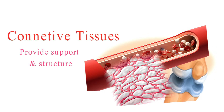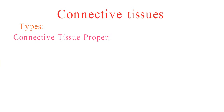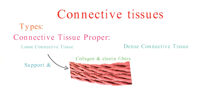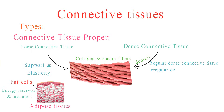So, let's explore connective tissues together. First, let's break down the different types of connective tissues. We have connective tissue proper, which includes both loose connective tissue and dense connective tissue. Loose connective tissue contains collagen and elastin fibers, providing support and elasticity. Adipose tissue, a type of loose connective tissue, is primarily composed of fat cells and serves as an energy reservoir and insulation. Dense connective tissue is densely packed with collagen fibers and can be further categorized into regular and irregular dense connective tissue.